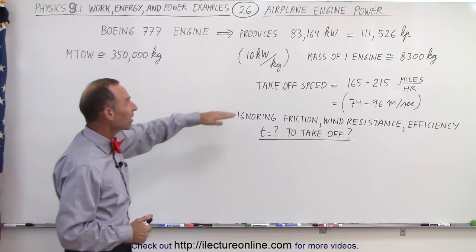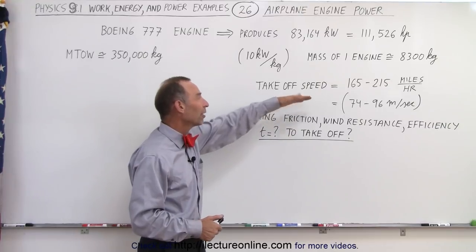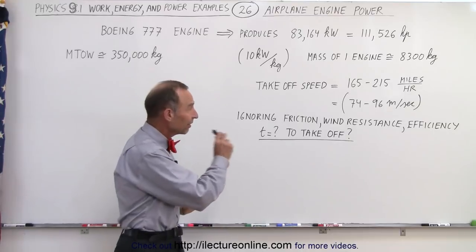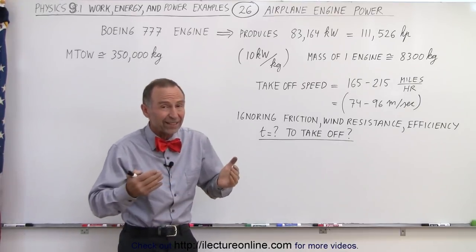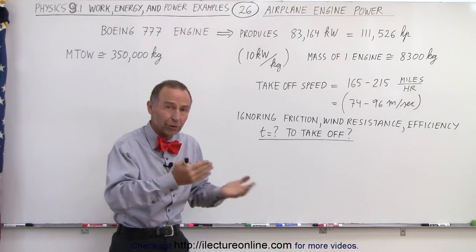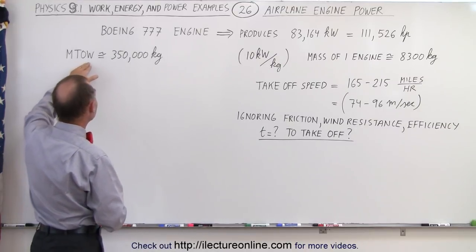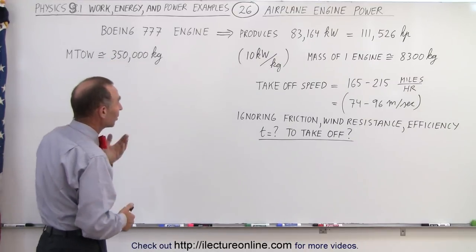Now since the takeoff speed of one of those planes varies from about 165 to 215 miles per hour, which is about 74 to 96 meters per second depending upon whether or not they're fully loaded, and realizing that the maximum takeoff weight is 350,000 kilograms...